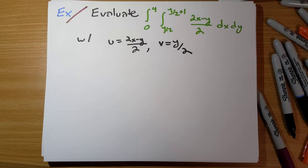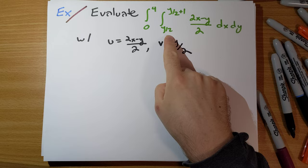Let's try to evaluate this integral here. y runs from 0 to 4, x runs from y over 2 to y over 2 plus 1. 2x minus y over 2 dx dy.